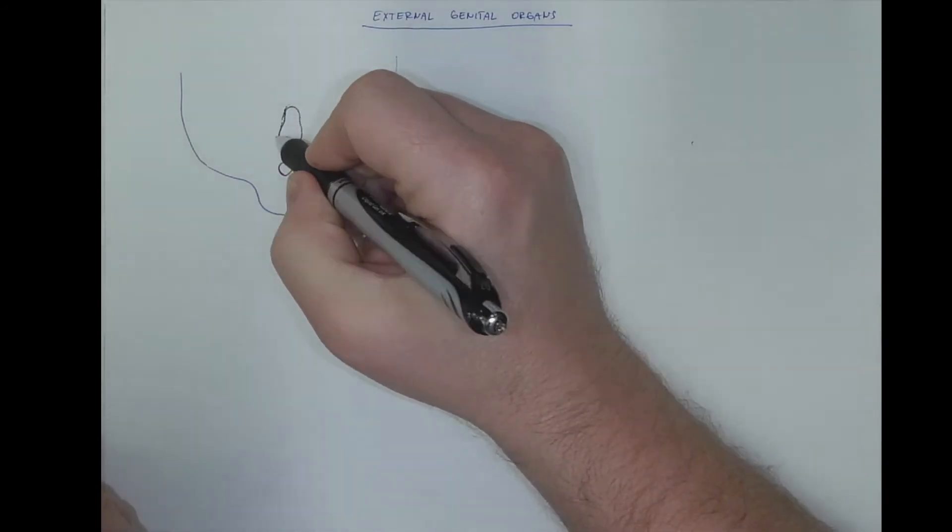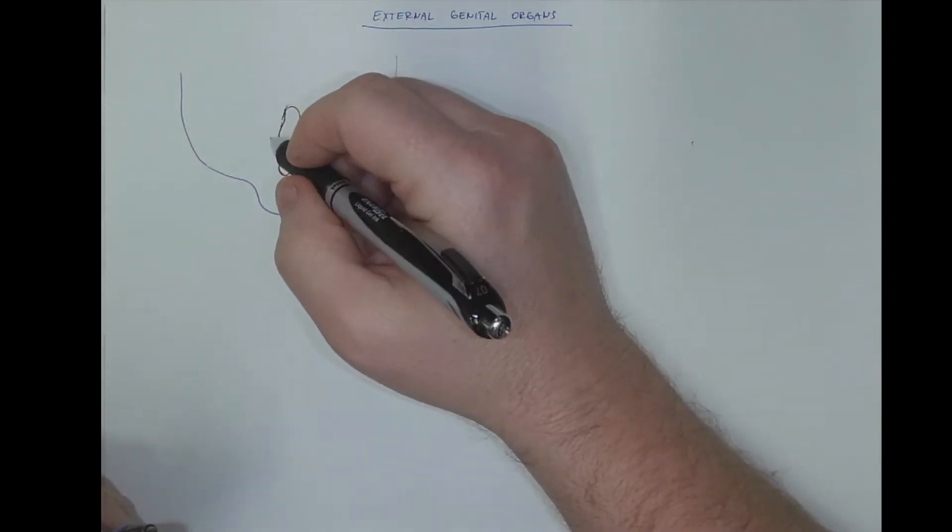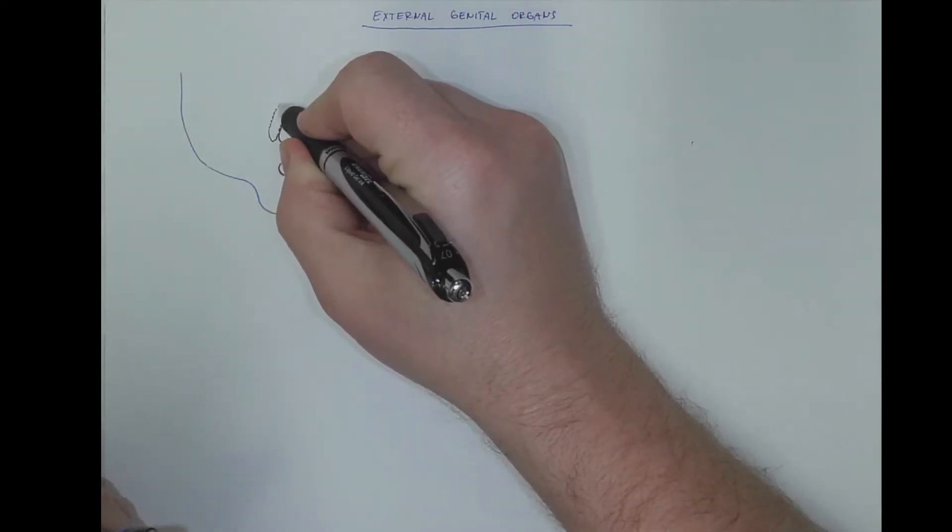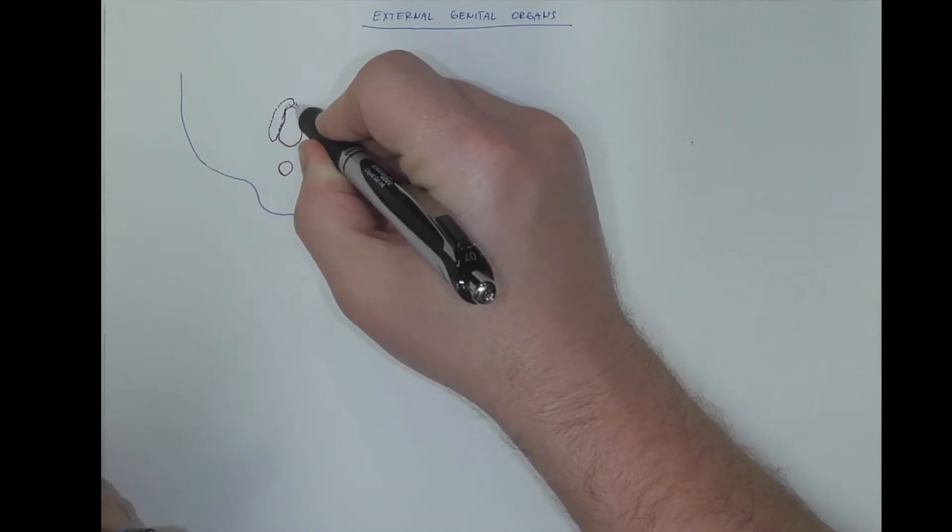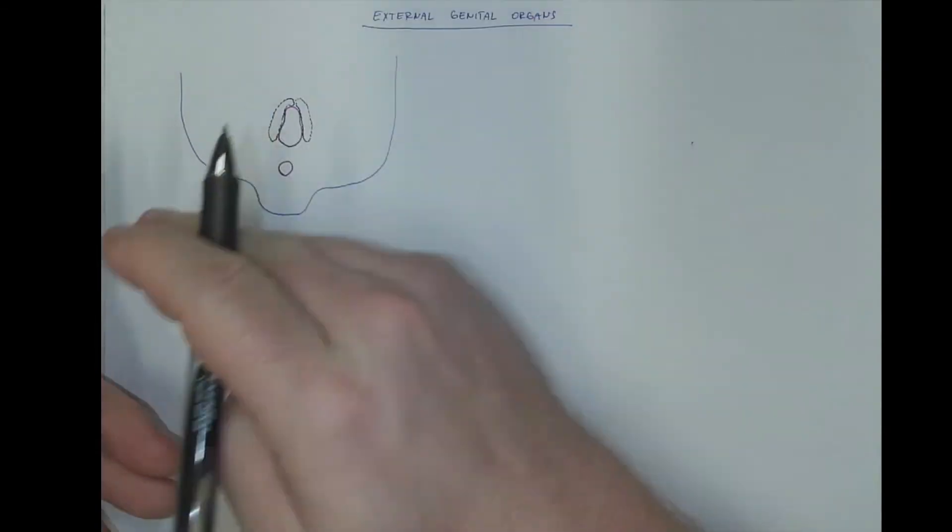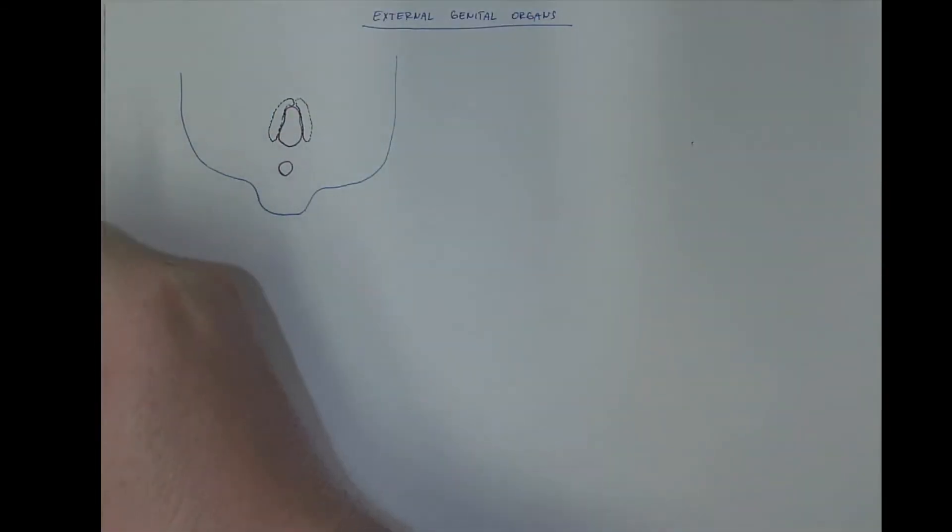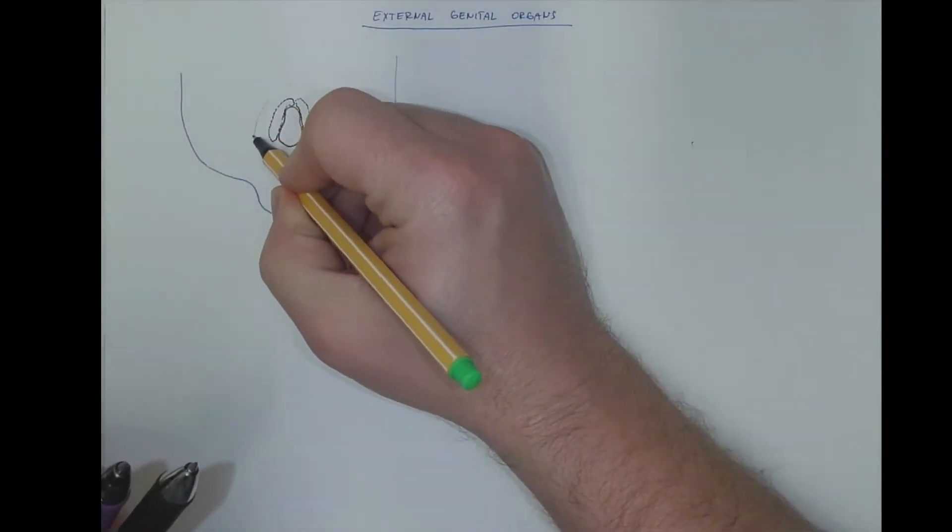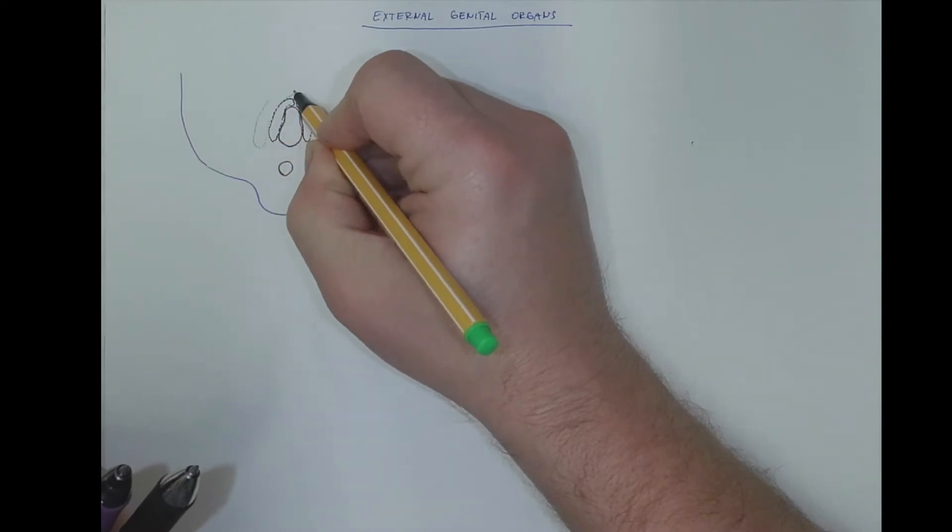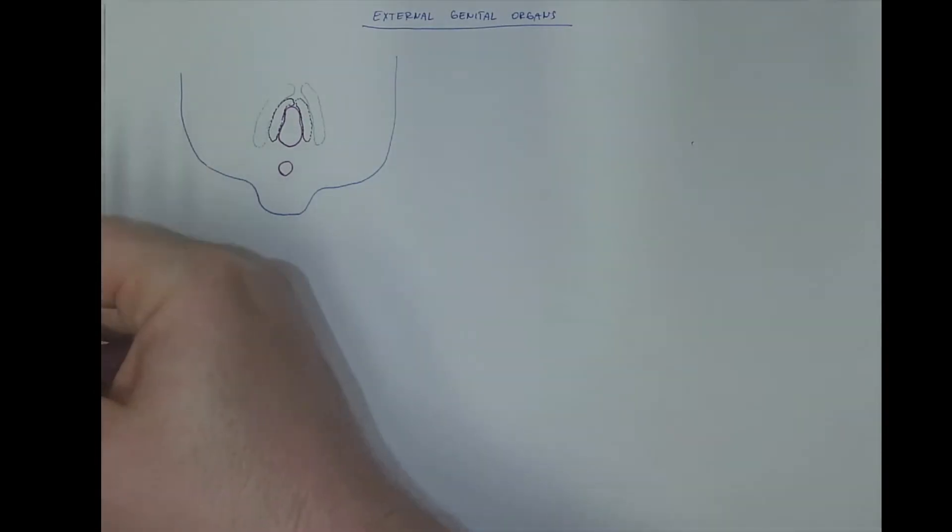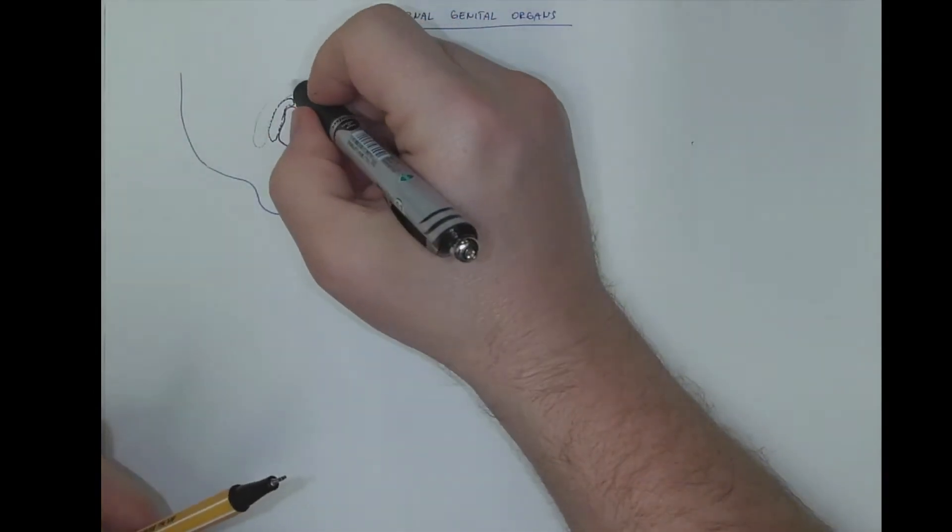They are inner, so-called urethral folds - elevated tissue. And there are outer genital swellings, and a genital tubercle here.